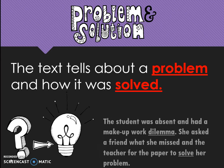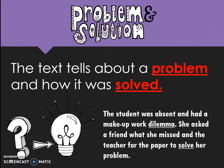For example, the student was absent and had a makeup work dilemma. She asked a friend what she missed and the teacher for the paper to solve her problem. The problem was a makeup work one and she solved it by asking a friend and the teacher. Words like dilemma, solve, and even problem are great signal words to help you determine the text structure of problem and solution.